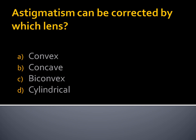Astigmatism can be corrected by which lens? I covered this in the Eye part series. Option A, Convex lens. Option B, Concave lens. Option C, Biconvex lens. Option D, Cylindrical. Our answer is Cylindrical.